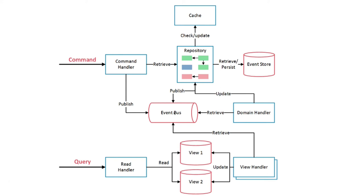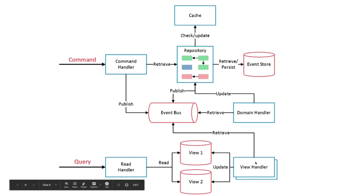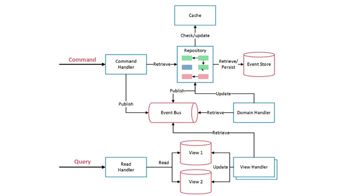For reads, the user does a normal query. The view handler sends an event to the event bus and retrieves information from the repository. You can see we've segregated read and write in two different places. There may be a projection running between the write database and the read database, synchronizing them. This means you don't depend on a single data source — you can scale up your read database independently for high read traffic, and optimize each database for its specific query type.